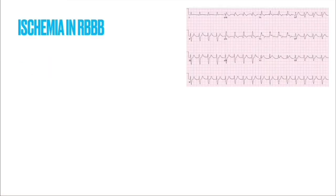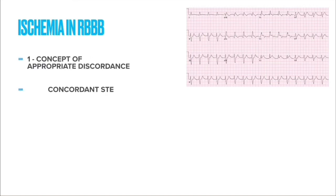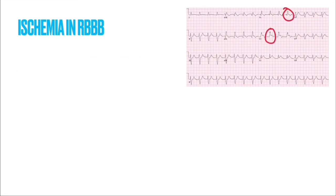How do we identify ischemia in right bundle branch block? The first concept is appropriate discordance. We already discussed that in right bundle branch block, the terminal QRS deflection and STT changes are in discordance. If there is any concordant ST elevation, this indicates ischemia. Here we can see in the ECG there is ST elevation in leads V1 and V2 — that is a concordant finding that we will not see in normal RBBB.